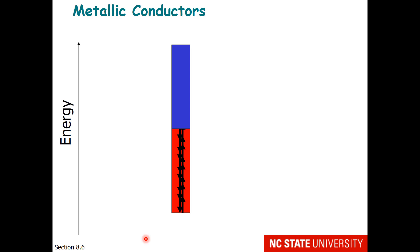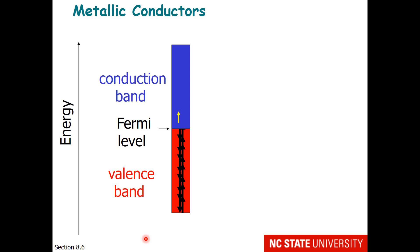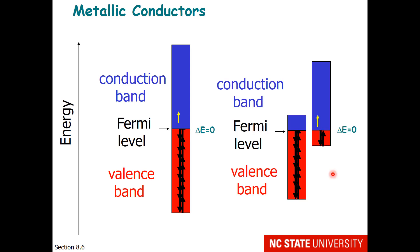Most metallic solids tend to be conductors. The valence band, which is full of electrons, is full right up to the Fermi level. The Fermi level you can think of as the highest occupied molecular orbital. The conduction band is mostly empty, except for those few electrons that have been excited and are able to reach it. These are the electrons that are mobile and move, allowing electricity to be transmitted. The energy gap between the Fermi level and the conduction band is zero for conductors. There might also be two bands if s and p orbitals overlap, but still the band gap is zero.